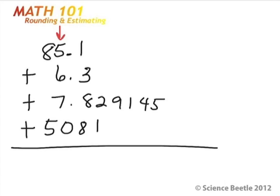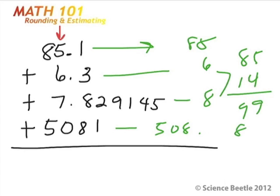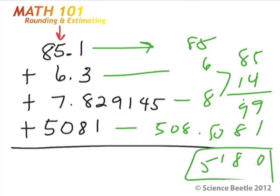On the count of three, go. So rounding each number: 85.6, rounded is 86; 508.14, rounded is 508; 85.99, rounded is 86; 810.5, rounded is 811. Adding those up: 86 plus 508 is 594, plus 86 is 680, plus 811... the answer I got was approximately 5,180.